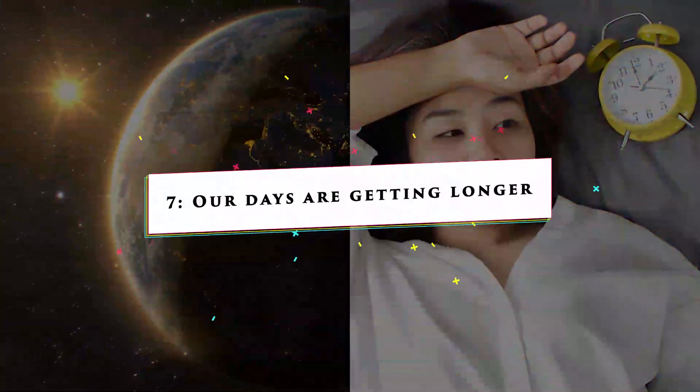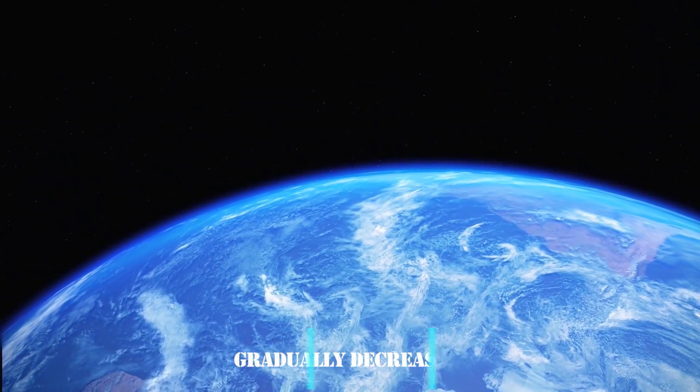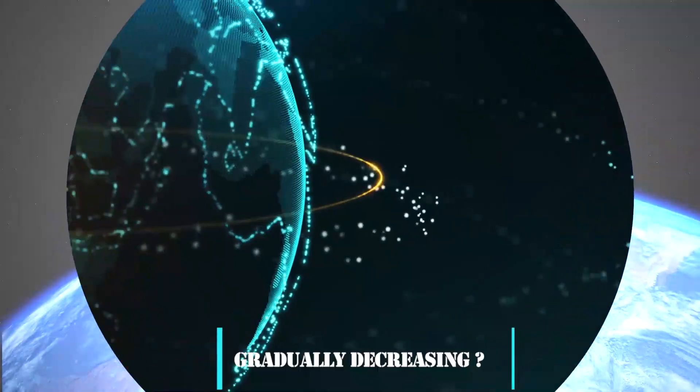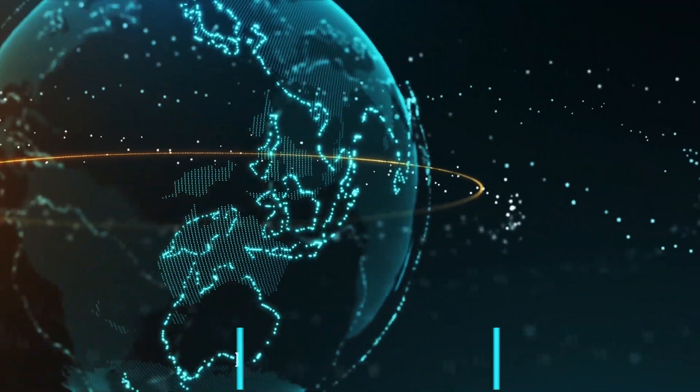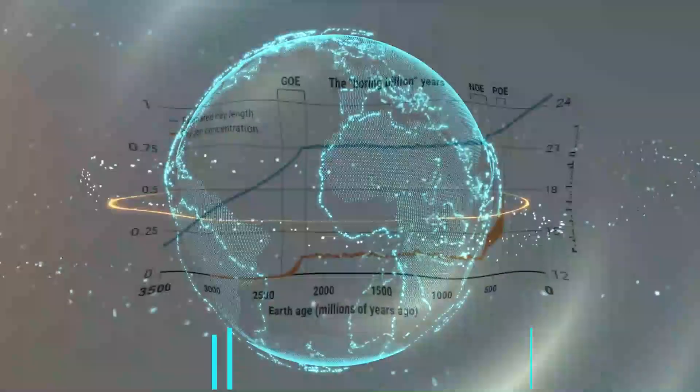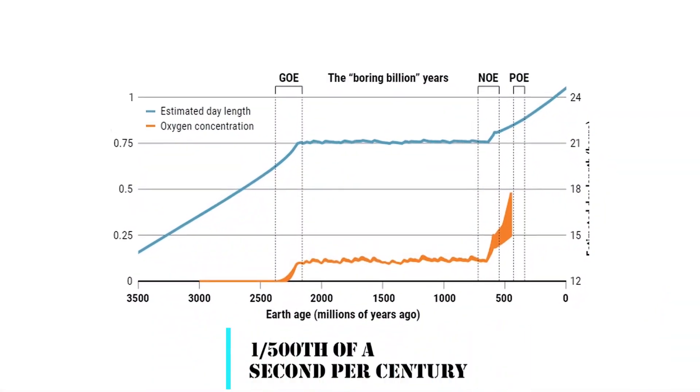Number 7: Our days are getting longer. Did you know that the Earth's rotation rate is gradually decreasing? The whole rotation of our planet's axis takes a little longer each year. The Earth slows down by 1/500th of a second per century,